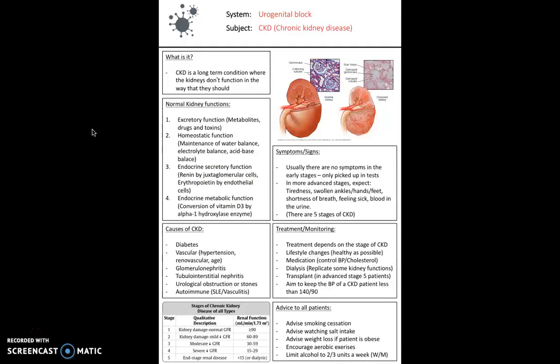The easiest way to think about this disease is to consider normal kidney function and how that can go wrong. If you know normal kidney functions - to excrete products, homeostasis, and endocrine secretion and metabolism - then CKD is easy to understand because those functions go wrong over time.